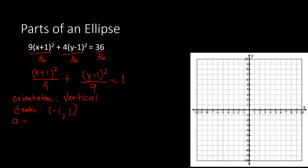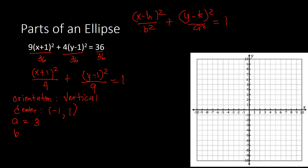Next we identify a. For vertical orientation, the format is (x minus h) squared over b squared plus (y minus k) squared over a squared equals 1. So a squared is under (y minus 1) squared, which is 9. Getting the square root of 9, a equals 3. And b squared is under (x plus 1) squared, which is 4. Getting the square root of 4, b equals 2.